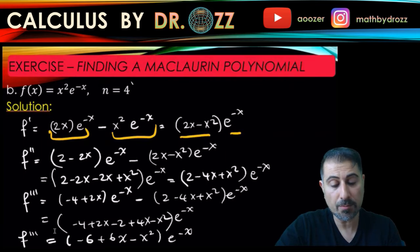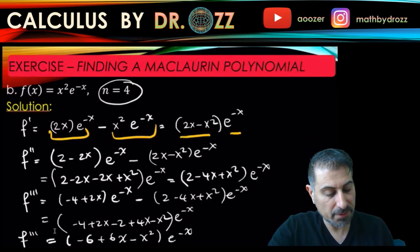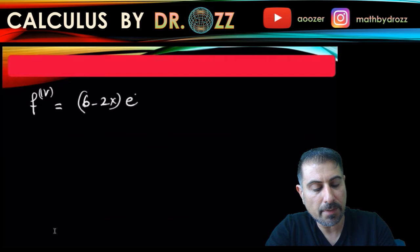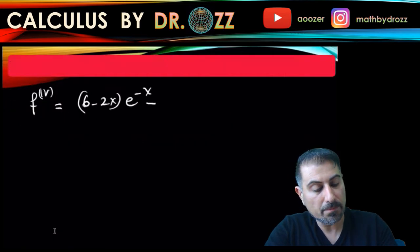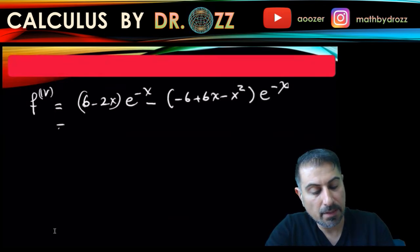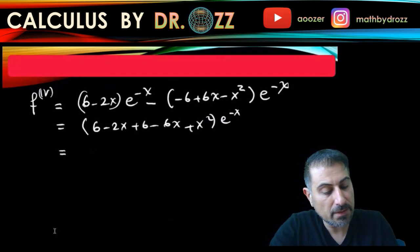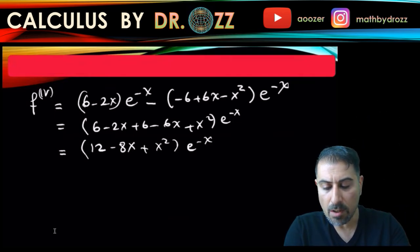We need a new slide for the fourth derivative. The derivative of the polynomial term is (6 minus 2x) times e to the minus x, plus the derivative of e to the minus x — bringing a minus sign — times (minus 6 plus 6x minus x squared). Pulling out e to the minus x and simplifying: (6 minus 2x) plus (6 minus 6x plus x squared) gives us a nice simplified form for the fourth derivative.